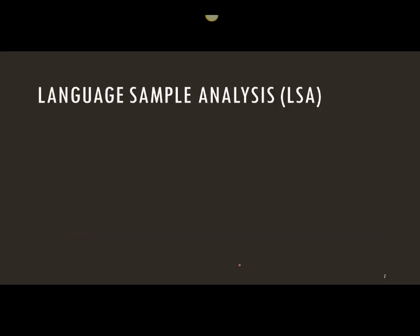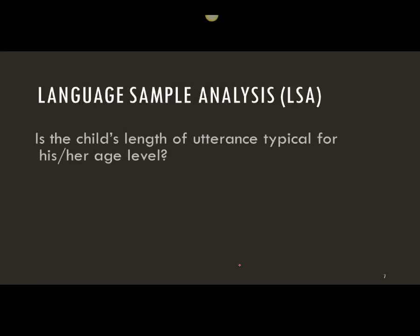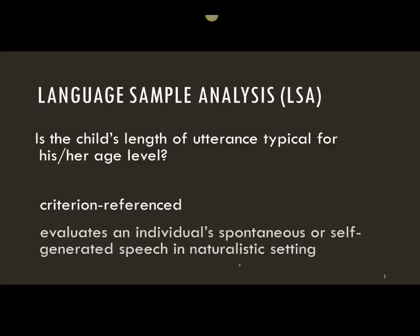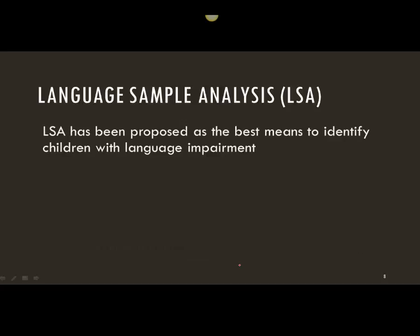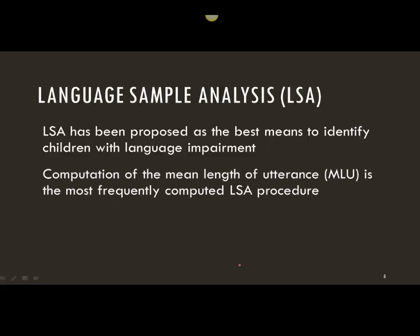Language sample analysis is one of our best developed and most widely used criterion-referenced assessments. We typically use it to answer whether a child's length of utterance is typical for his or her age level. The good thing about language sample analysis is that the speech is generated in a very naturalistic setting. Many people believe that this is perhaps our best measure to identify language impairment, even though it's criterion-referenced. We typically calculate mean length of utterance, but we can also calculate other measures such as grammaticality or complex syntax.